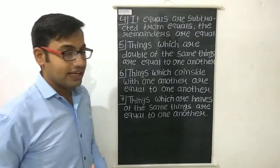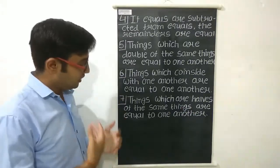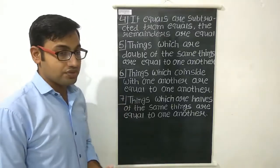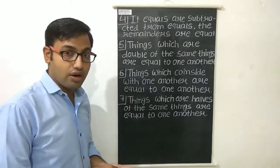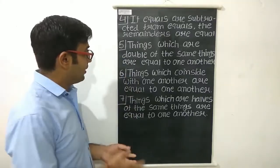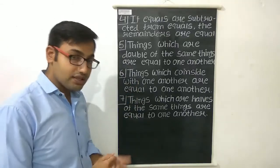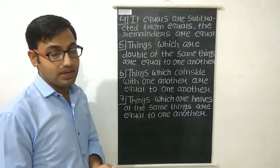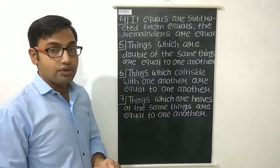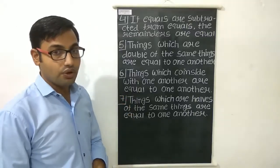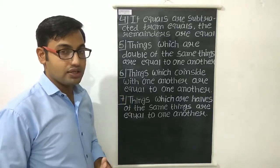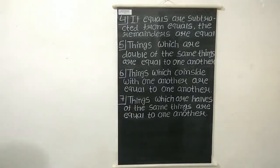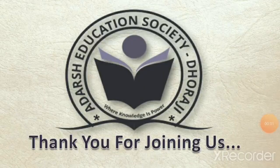These are the seven axioms given in our textbook. There are many more axioms but currently we study these seven. These axioms are not in a fixed order, so you will never be asked to write the sixth or seventh axiom specifically — you may be asked to write any two axioms out of seven. Understand all the axioms. Thank you for joining us.